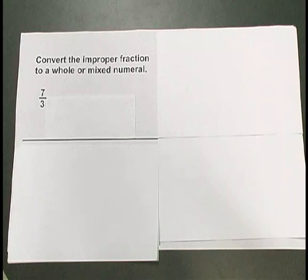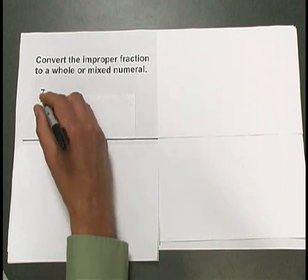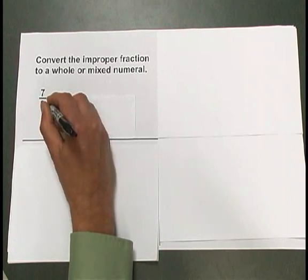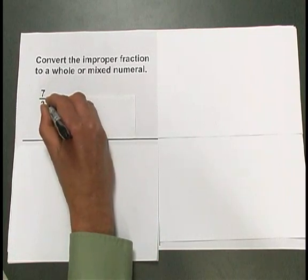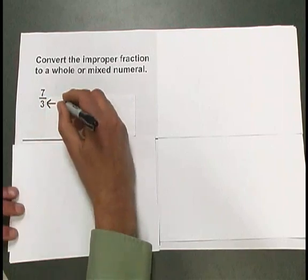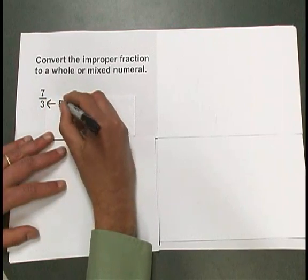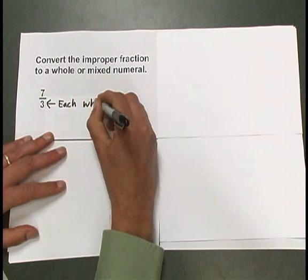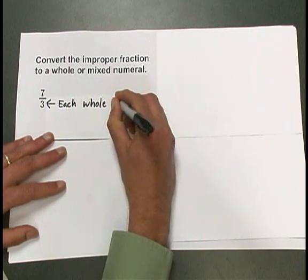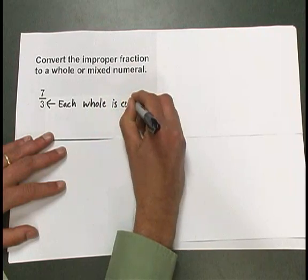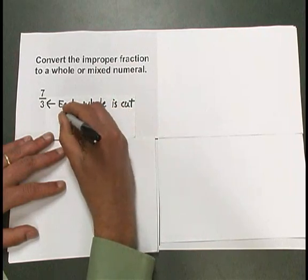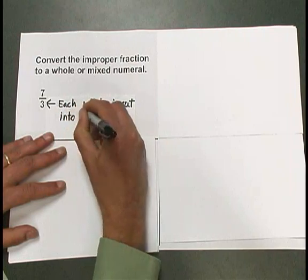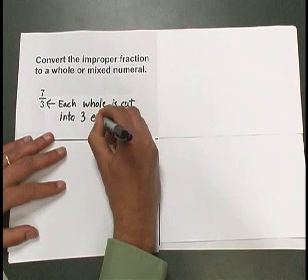Let's think about what the 7 and the 3 tell us about this fraction. The 3 in the denominator tells us that each whole is cut into 3 equal pieces.